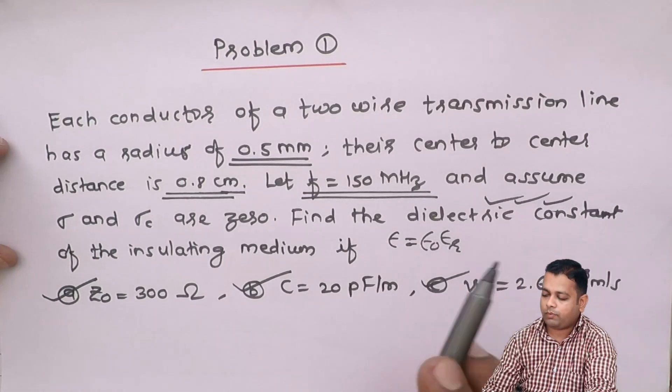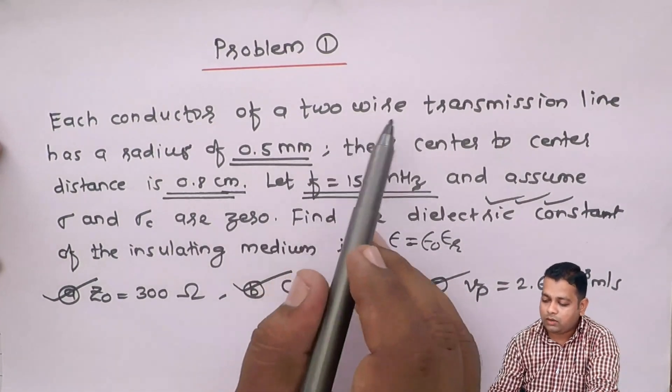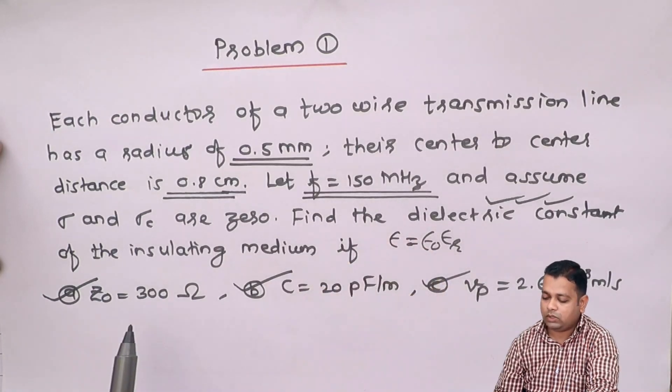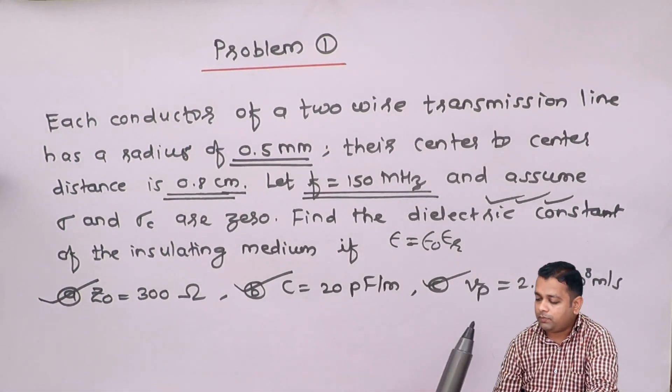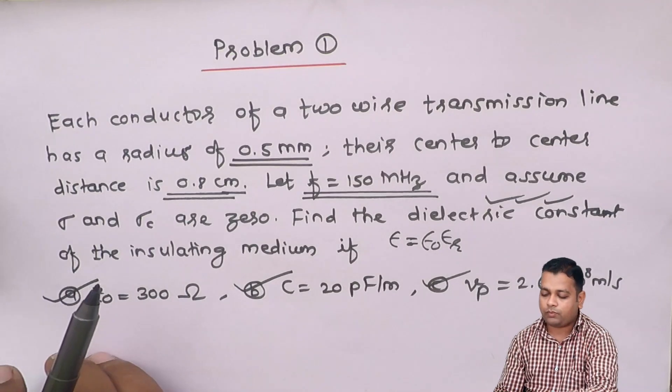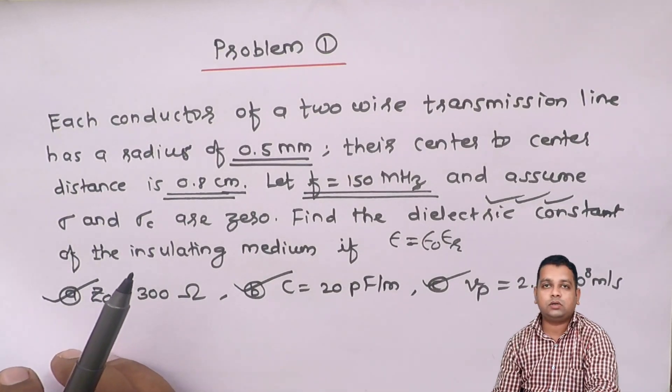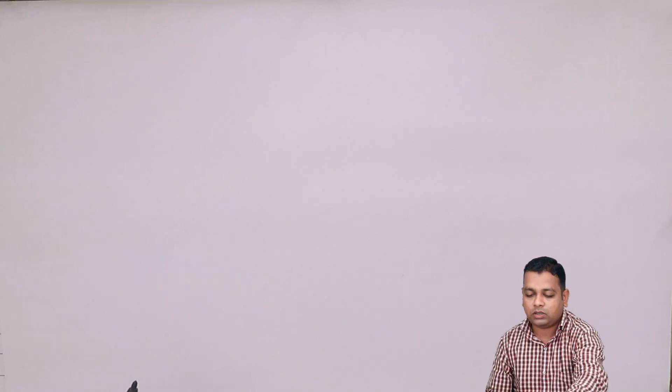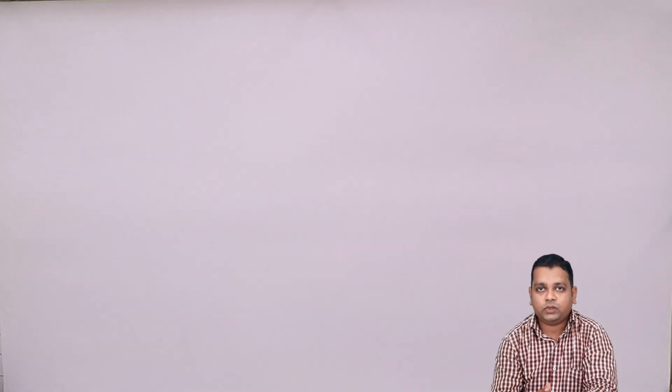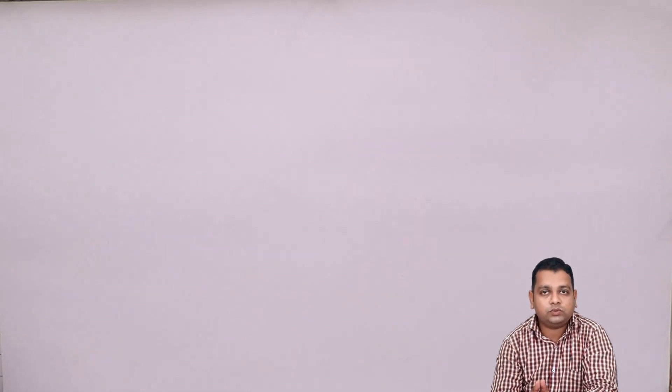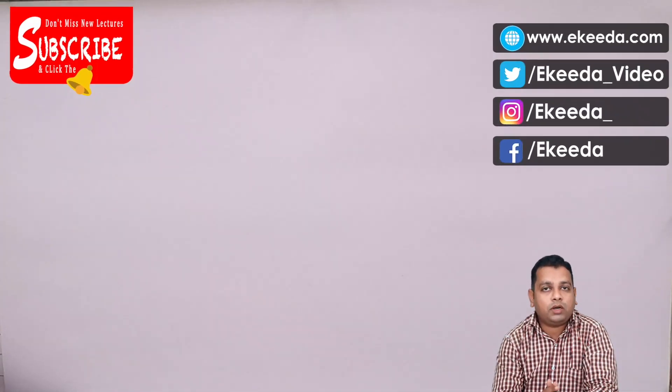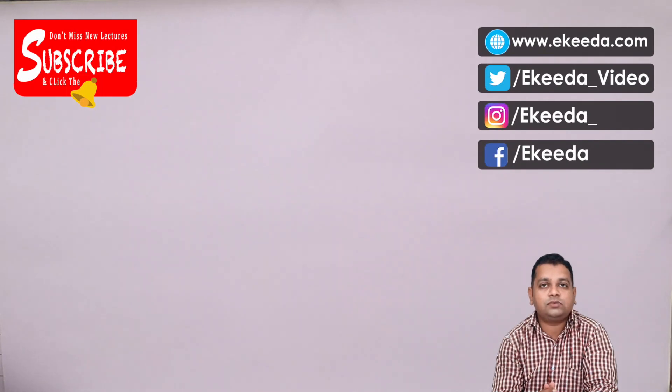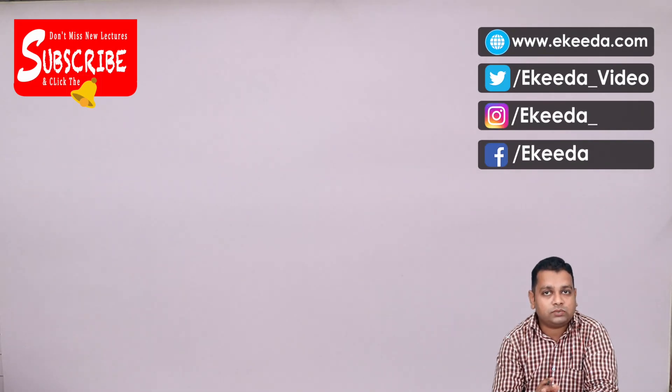We have obtained the dielectric constant for the two-wire transmission line if we are provided with various values: either the characteristic impedance, either the capacitance per unit length, or the phase velocity. I hope you have understood how to obtain the dielectric constant for the medium that separates the two conducting wires in this transmission line. In the next video, we shall be selecting another multi-conductor transmission line, practicing for the parameters of the coaxial transmission line. For getting such more problems and details of electromagnetic field theory, you can subscribe to Ikeda channel. Thank you.